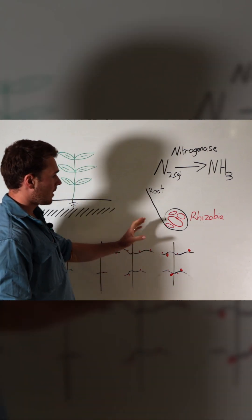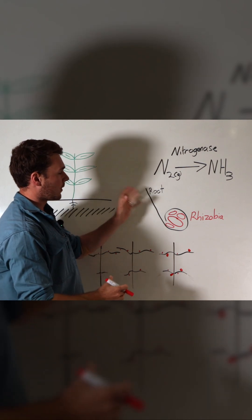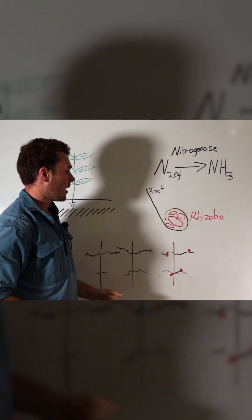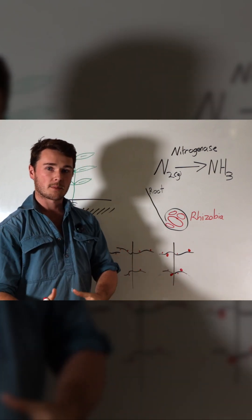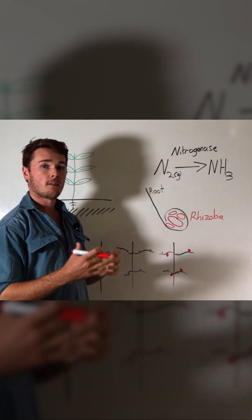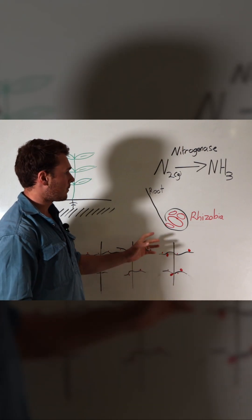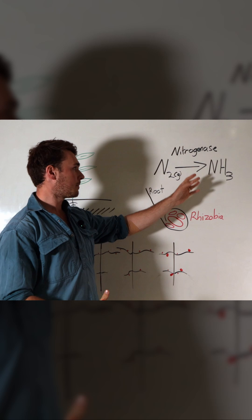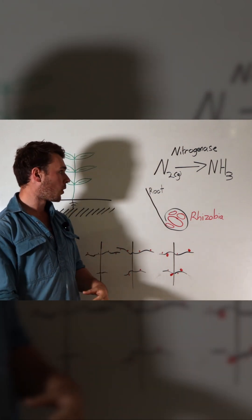Now from here, the rhizobia bacteria takes in nitrogen gas. The plant actually feeds the rhizobia with carbohydrates and food so that it can perform this function - it takes around 16 or so ATP for this process to occur. So the rhizobia bacteria will convert nitrogen gas into ammonia - not ammonium, but ammonia - where the plant can then convert that into amino acids for use.